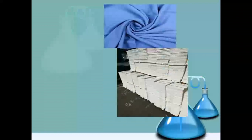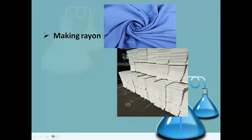The next use of sodium hydroxide is making rayon. Rayon is like a fabric. So sodium hydroxide is also used in making fabric like rayon.